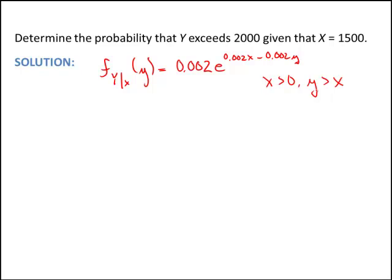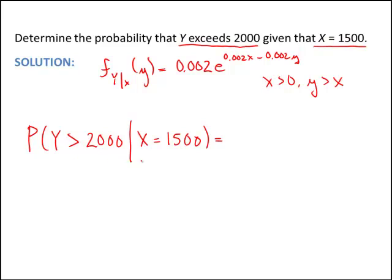Alright, so now I want to find the probability that y exceeds 2,000 given that x is 1,500. So let me just write this in probability language. That's the probability that y is greater than 2,000 given x is equal to 1,500. So in order to compute this, I need the probability density function for y given x, which we already have up here. And then I'm just going to integrate this for y is greater than 2,000. So let's go ahead and do this.